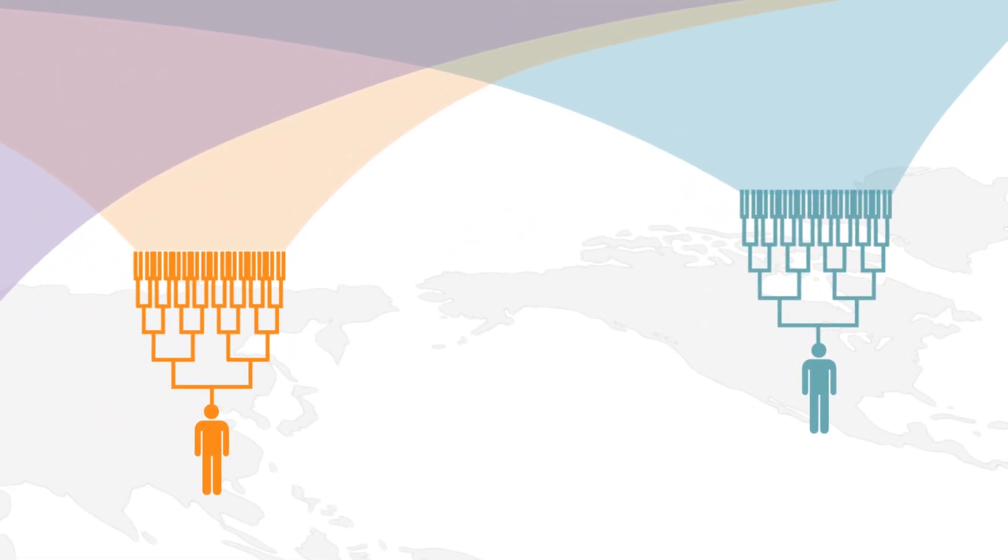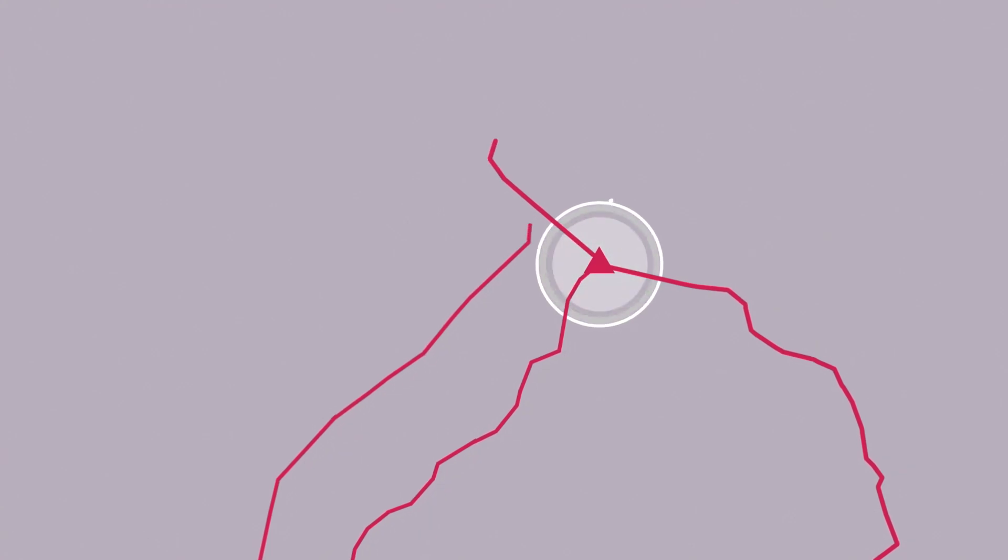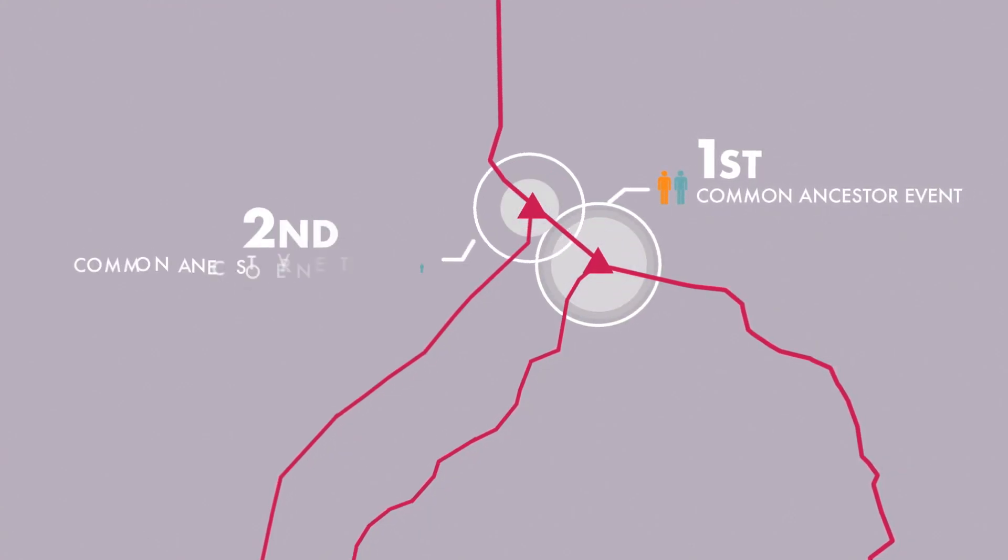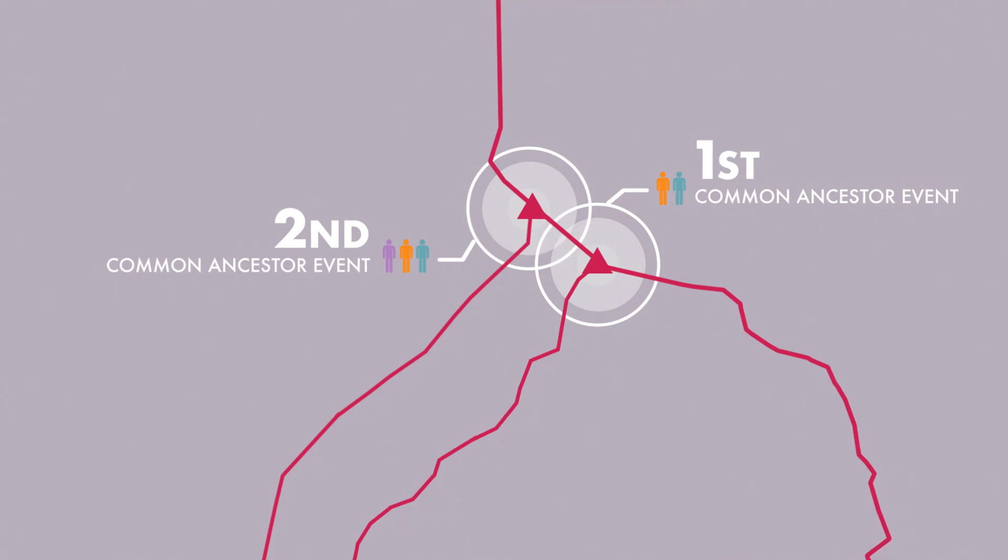That pattern can vary across the genome. So, for the pink lines of ancestry, we see that the orange and blue individuals have a common ancestor before they have a common ancestor with the purple individual.